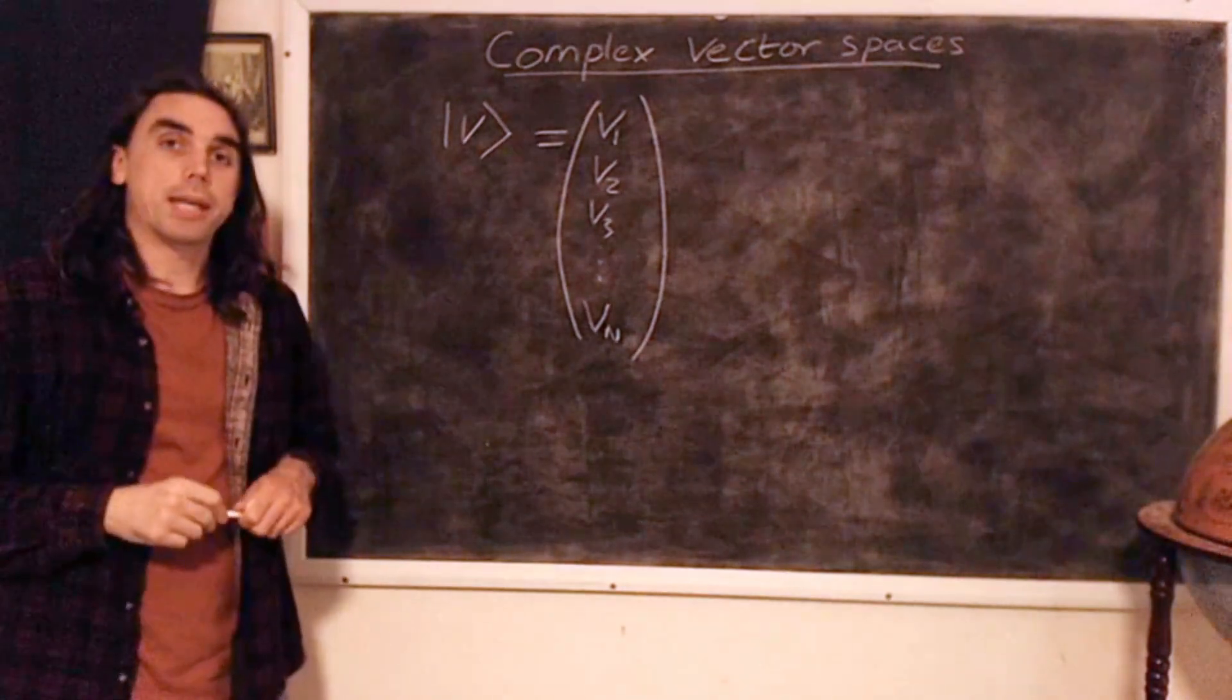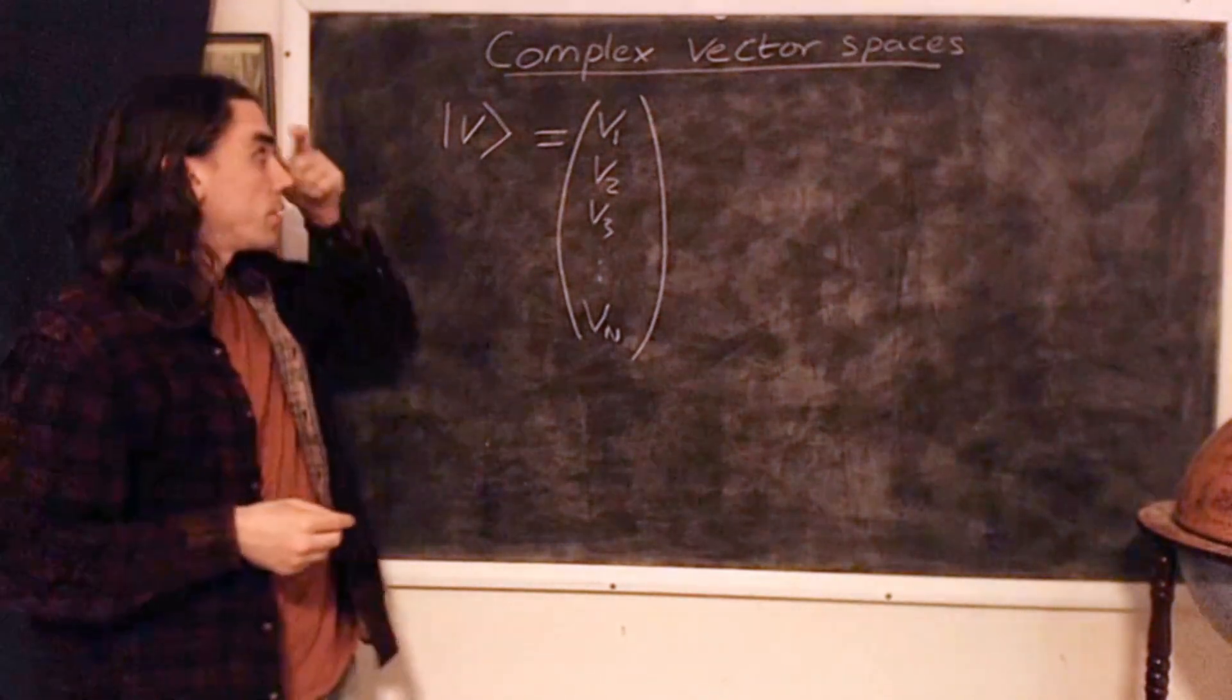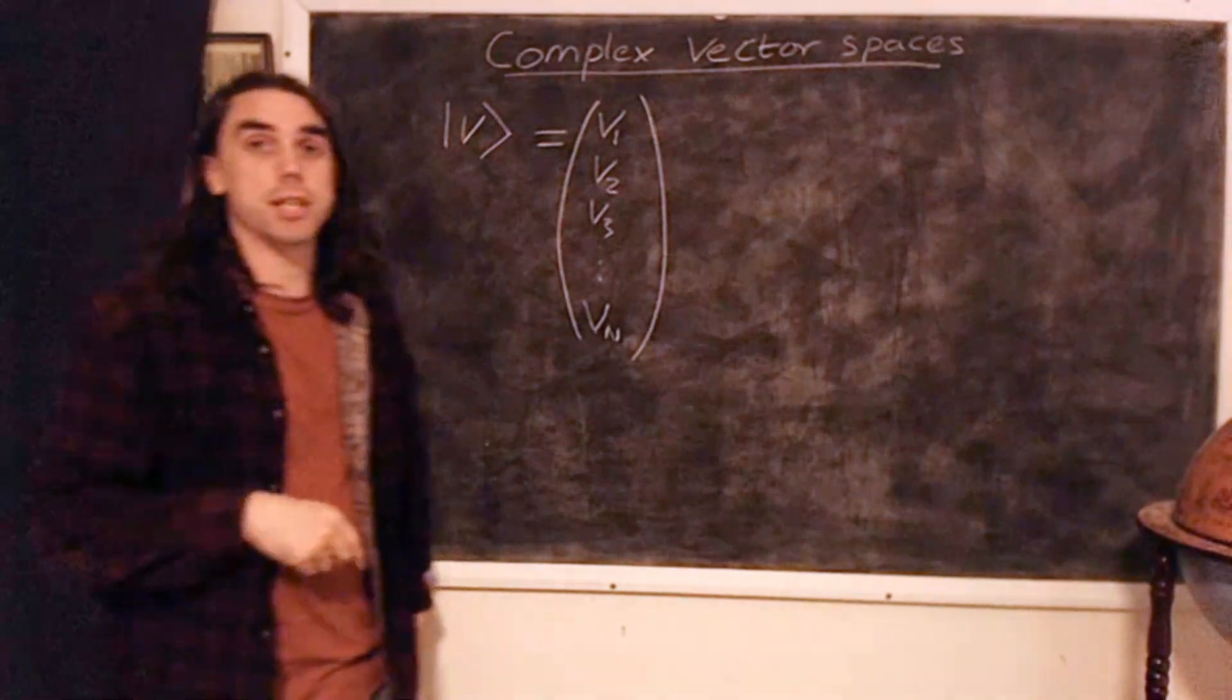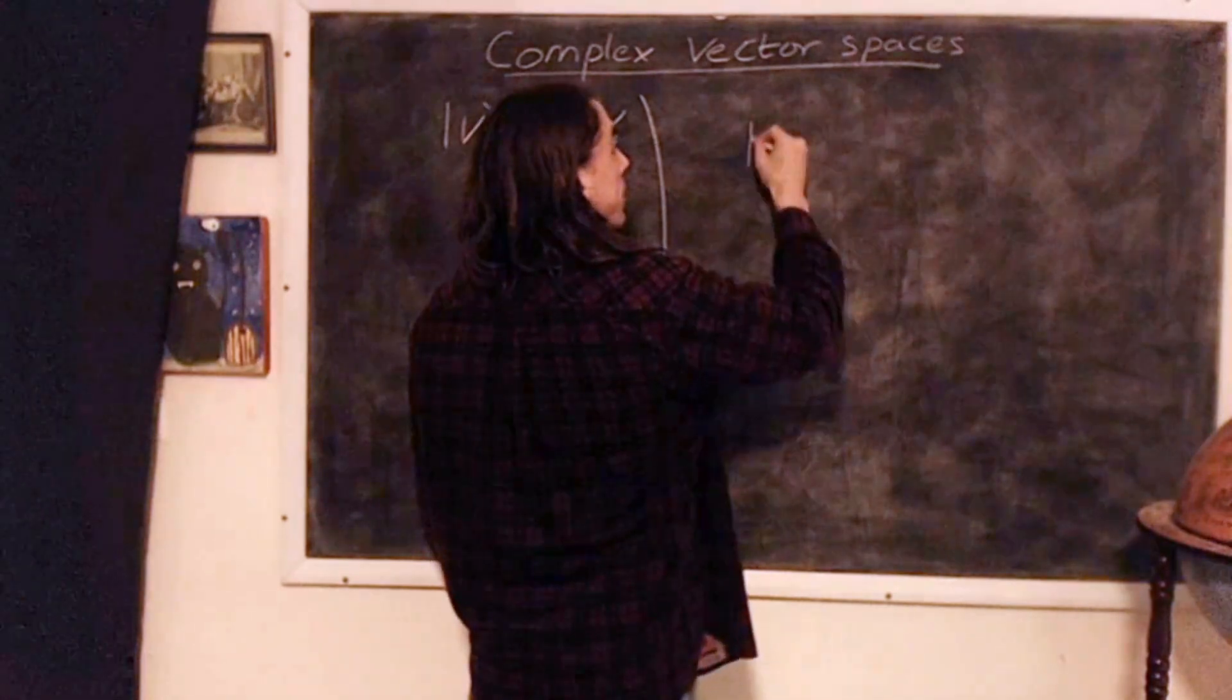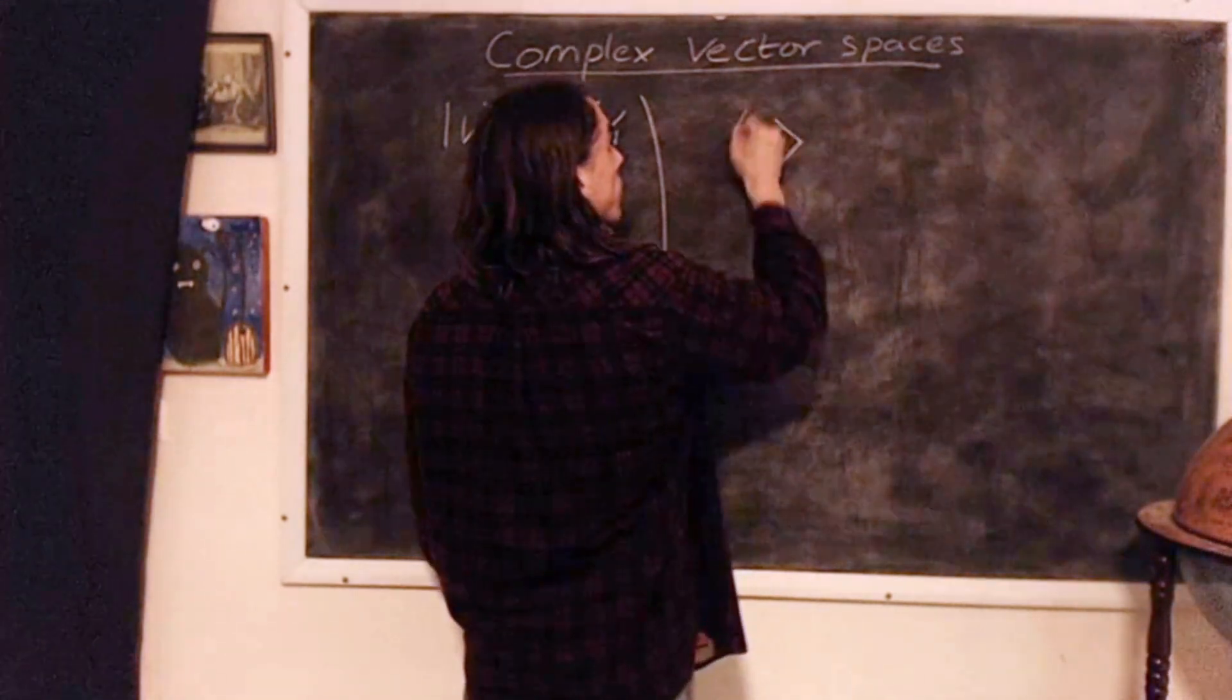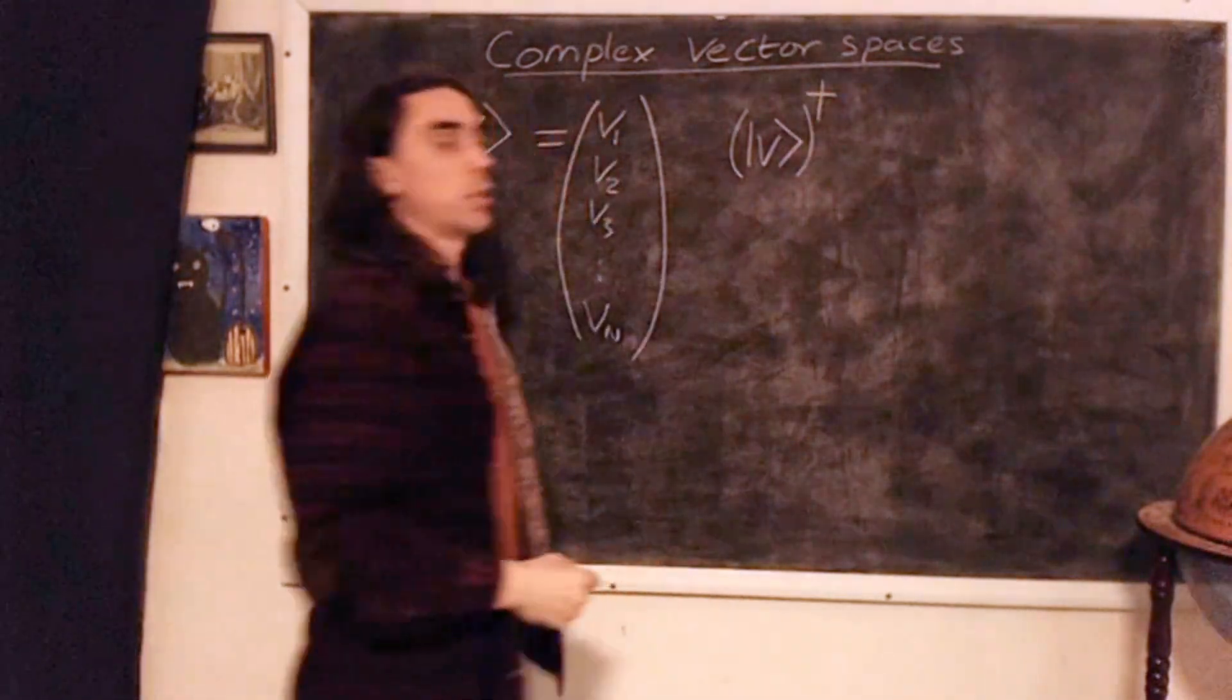And a particular convenience of the notation is that we write what's called the Hermitian conjugate of a vector, which is the complex conjugate transposed, in the following form. So in general, the Hermitian conjugate is indicated by a cross like this.